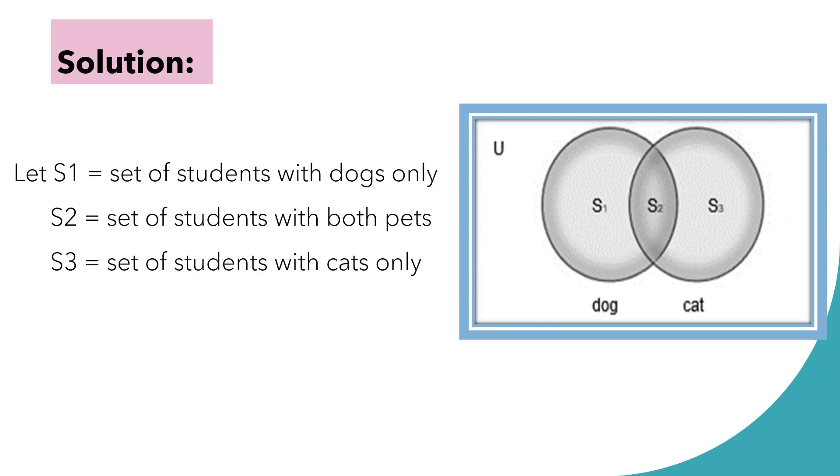For our solution, we are going to use a two-circle Venn diagram. Let us represent them as S1 or set 1, set of students with dogs only. Set 2 or S2, set of students with both pets. That is their intersection. Set 3 or S3, set of students with cats only. And we have also U as the universal set.